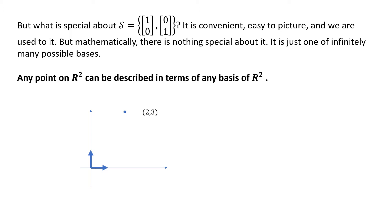When we think of it this way, these are coordinates that describe how to put vectors together. What's special about (1,0) and (0,1)? Nothing — it is convenient, it's easy to picture, and we're used to it. That's the only special thing about it. Mathematically, it is a basis of R2, meaning you can build everything in R2 out of it, but it's not the only one. Any vector in R2 can be built using any basis.